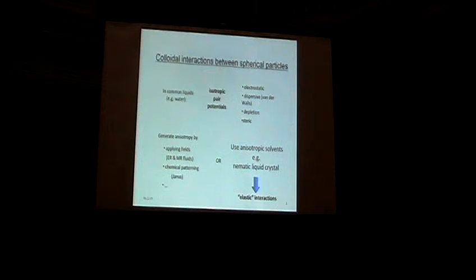So in common isotropic liquids like water, the colloidal interactions you typically see are isotropic. The pair potentials are spherically symmetric. People generate anisotropy in the interaction in various ways, either by applying fields, for example in electrorheological or magnetorheological fluids, or maybe chemical patterning of spherical particles that are called Janus particles.